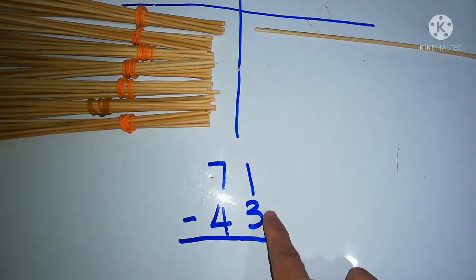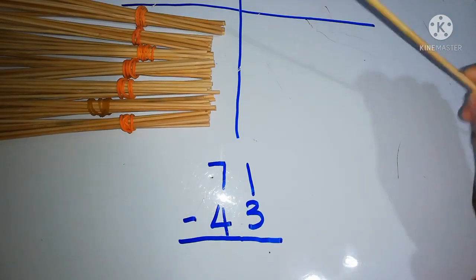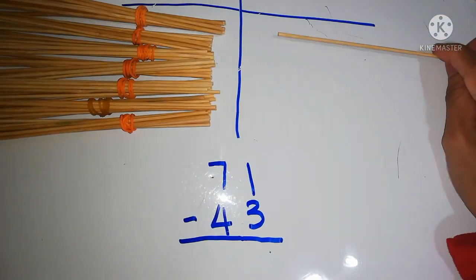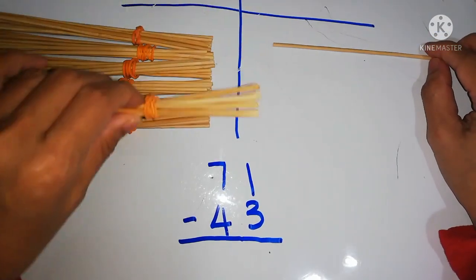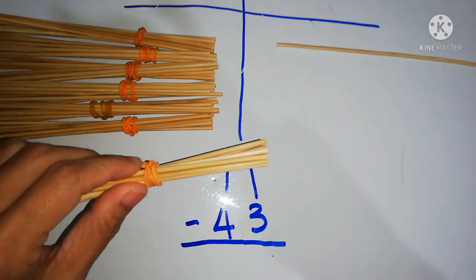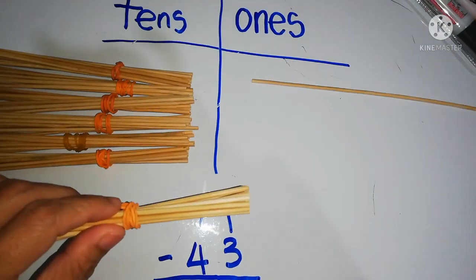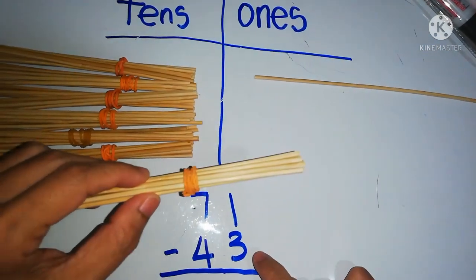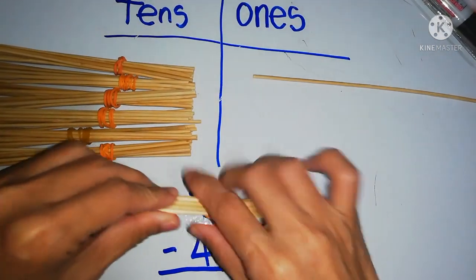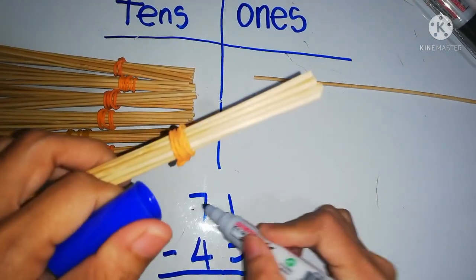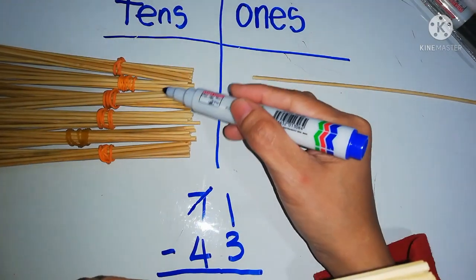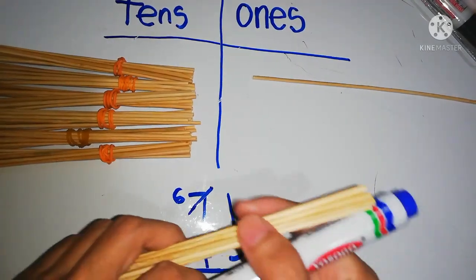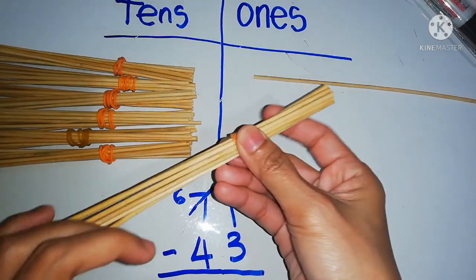71 minus 3. We have 1, and we need to minus 3. We don't have enough sticks, so we take 1 from a ten. We take from 10 because we don't have enough to minus 3. So we take 1 ten.